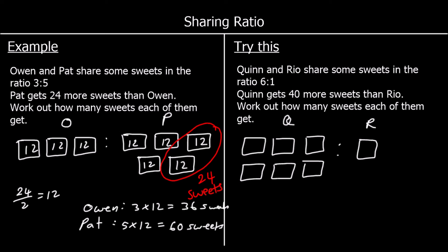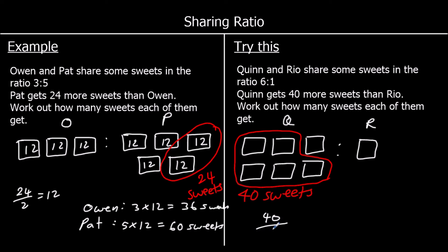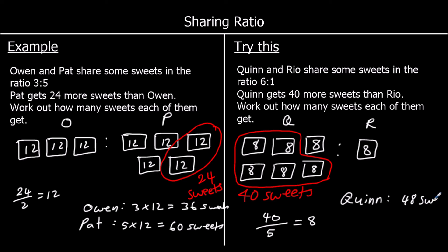Quinn gets 40 more sweets than Rio. So how many more boxes does Quinn have? Quinn has five more boxes, and these five boxes must have 40 sweets in them. So how many sweets go in each box? 40 over 5 is 8, so every box has 8 sweets in it. Quinn has 6 eights, so Quinn has 48 sweets. And Rio has 8 sweets.